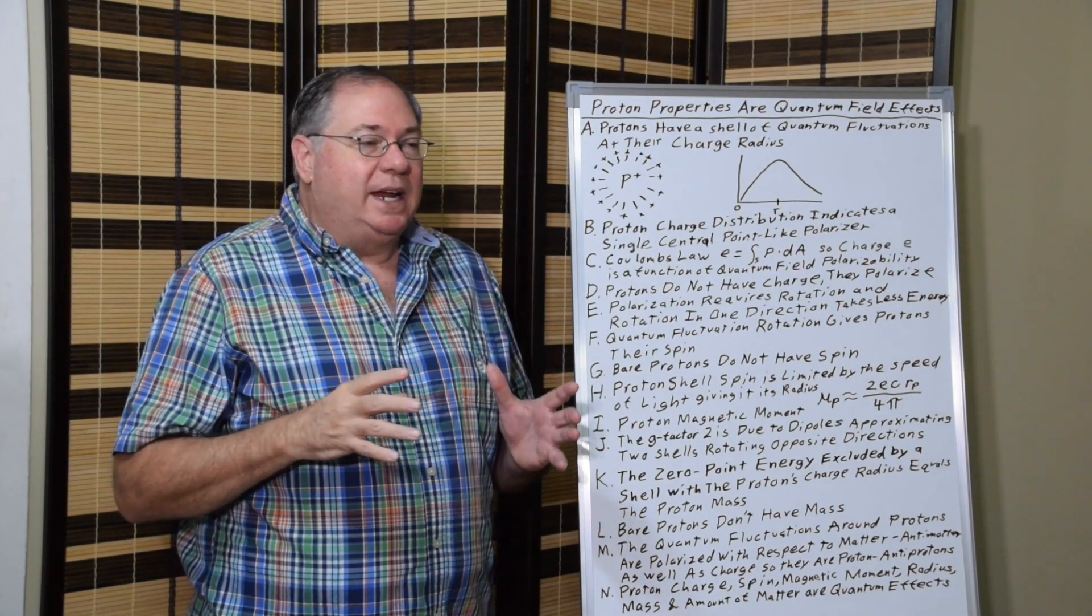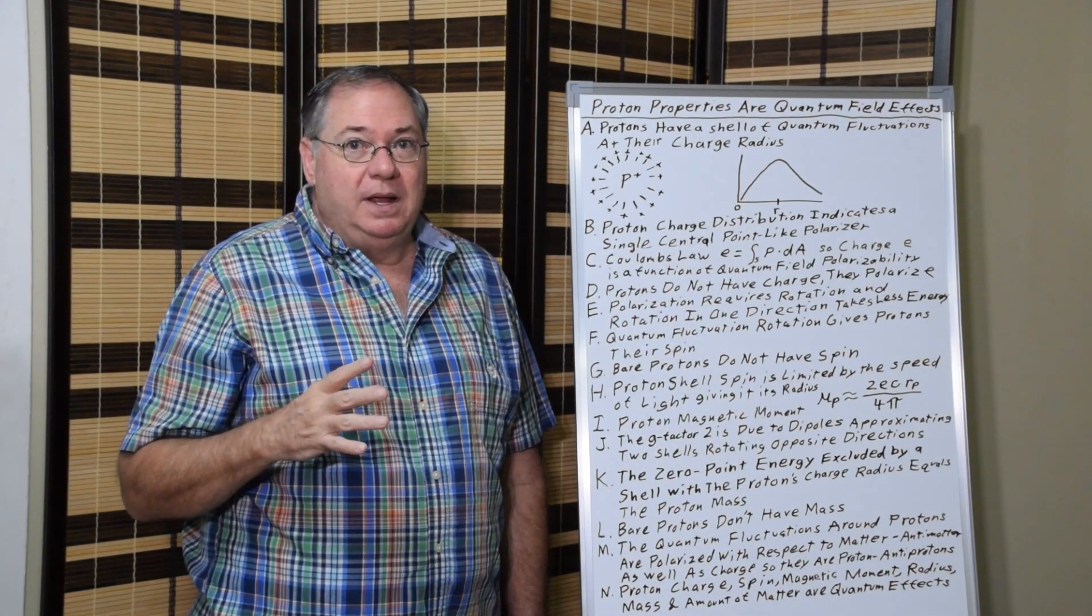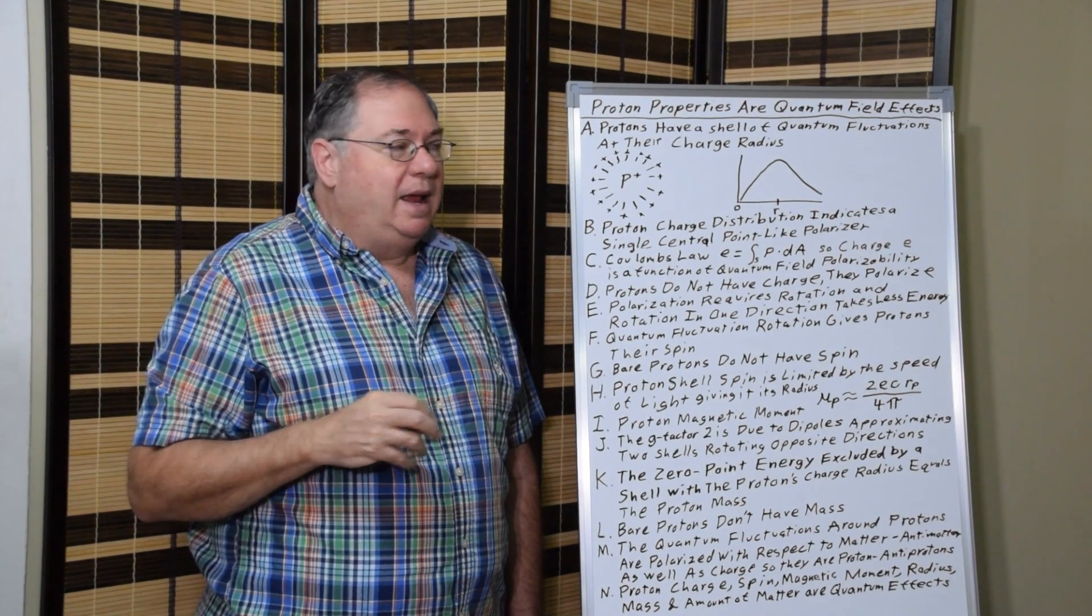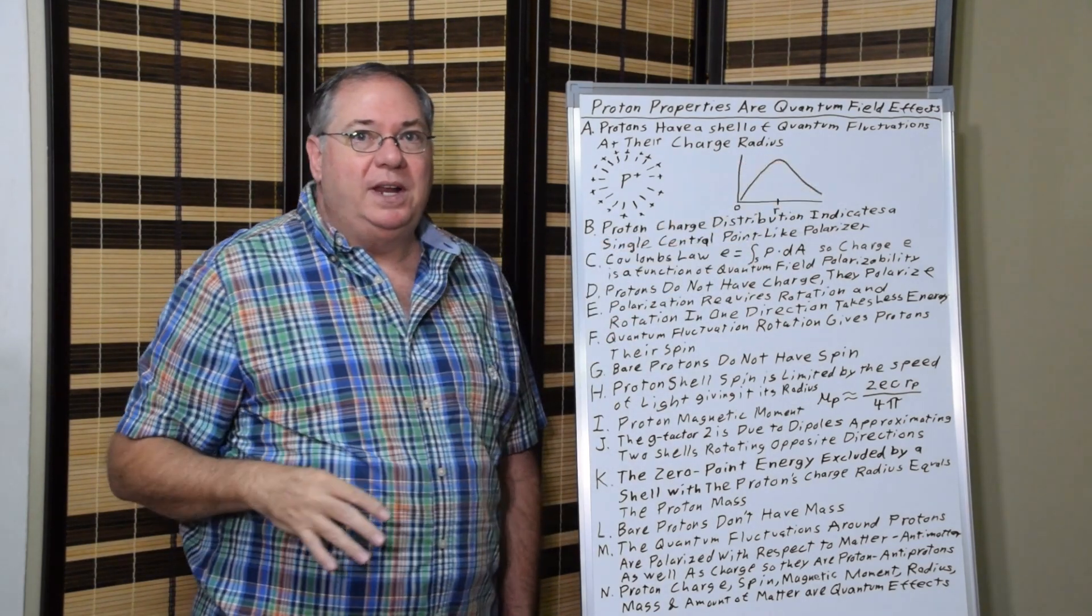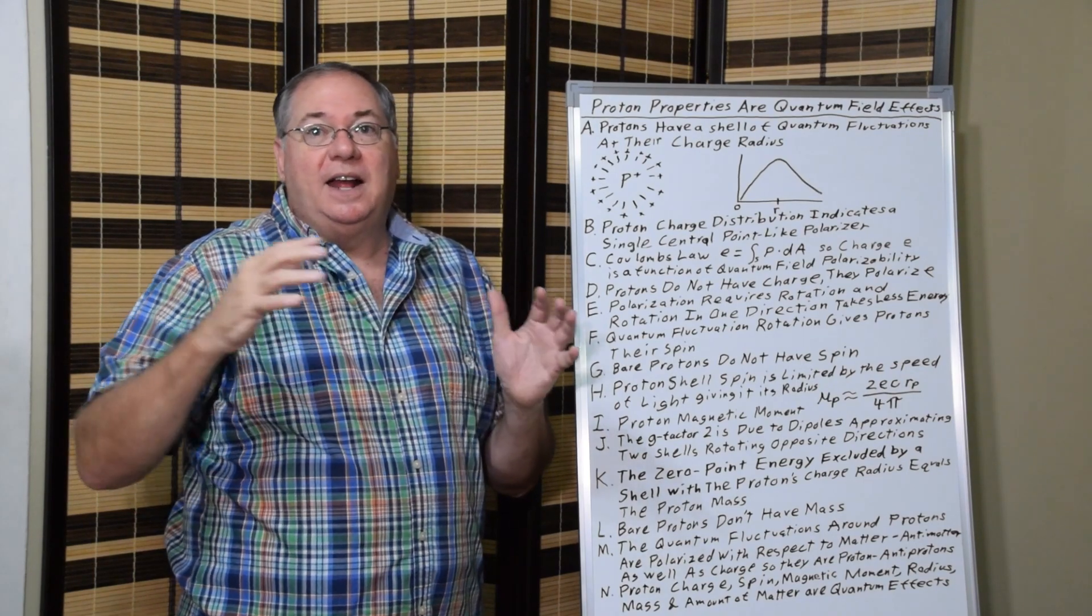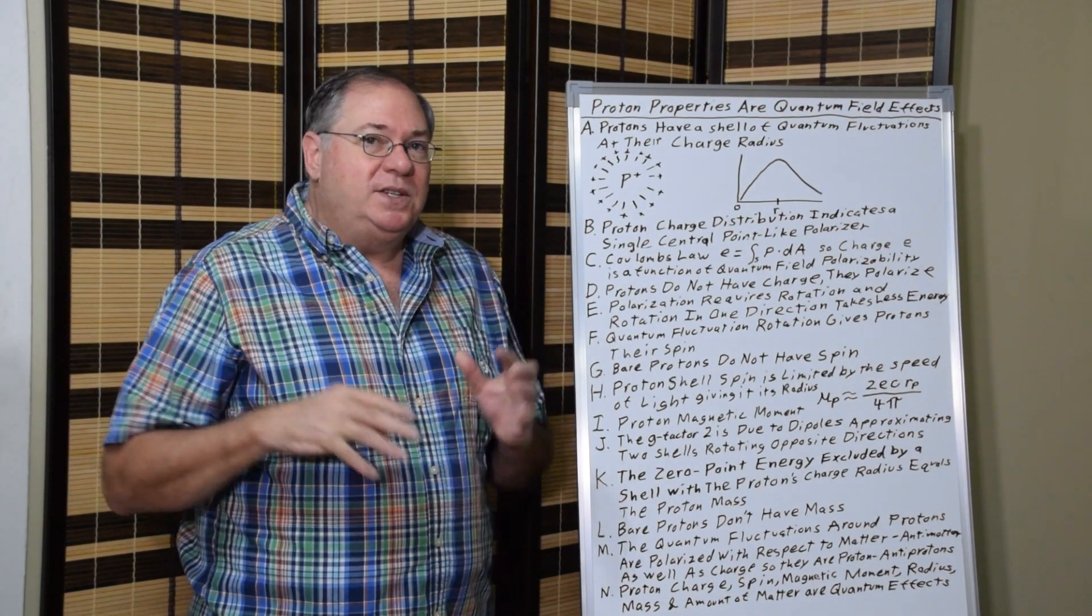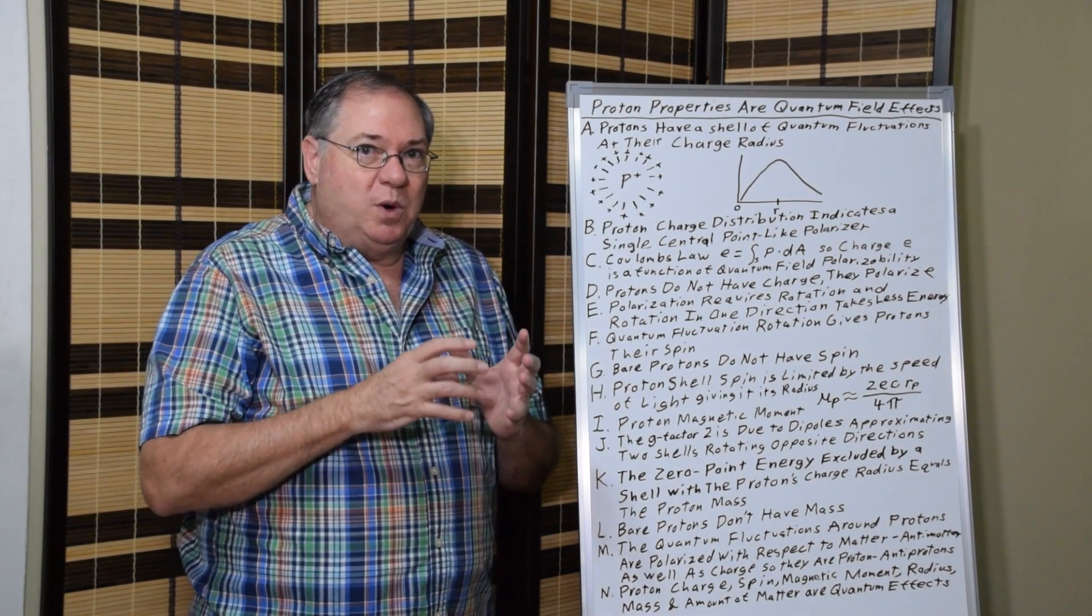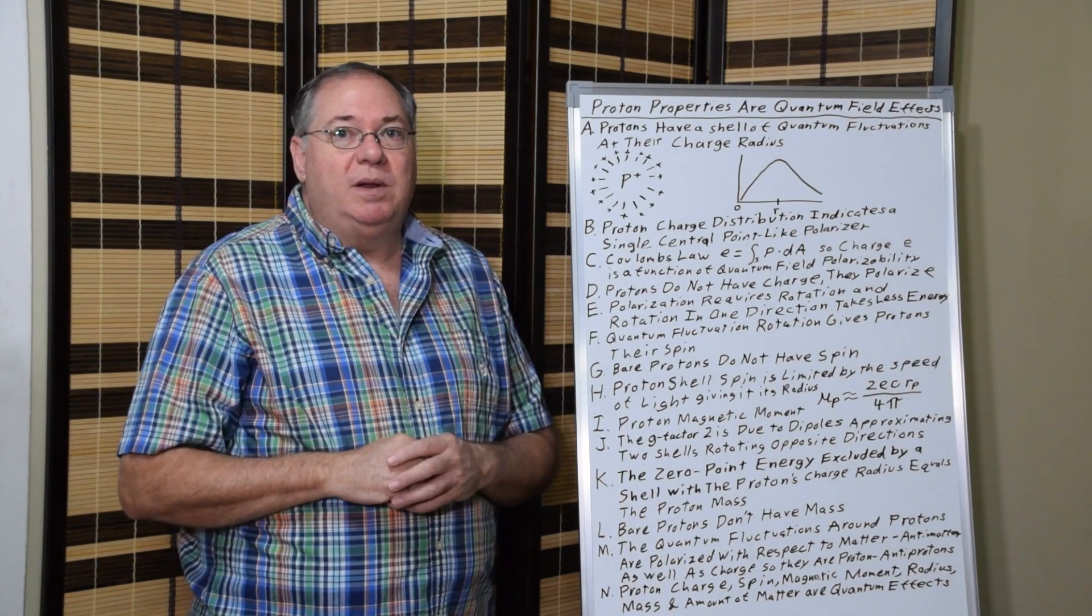And so what it looks like is that we have a point-like polarizer that doesn't even have charge in the middle. And as it polarizes the quantum field, the charge magnitude increases until you get to the charge radius. And then outside of that, it starts to decrease. And so this gives us a picture of what the structure might look like. That we might have some sort of bare proton in the middle surrounded by a shell of quantum fluctuations.